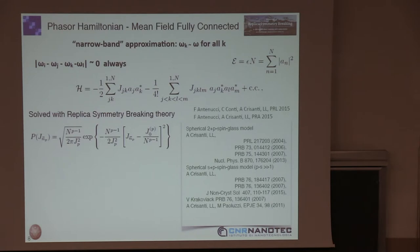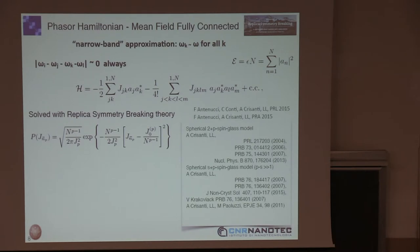This first approximation is called 'narrow band': all frequencies within their linewidth can be considered as overlapping, which means the frequency matching condition is always satisfied. In this case, we end up with a fully connected standard 2+4 spherical spin model — only the spins are complex.